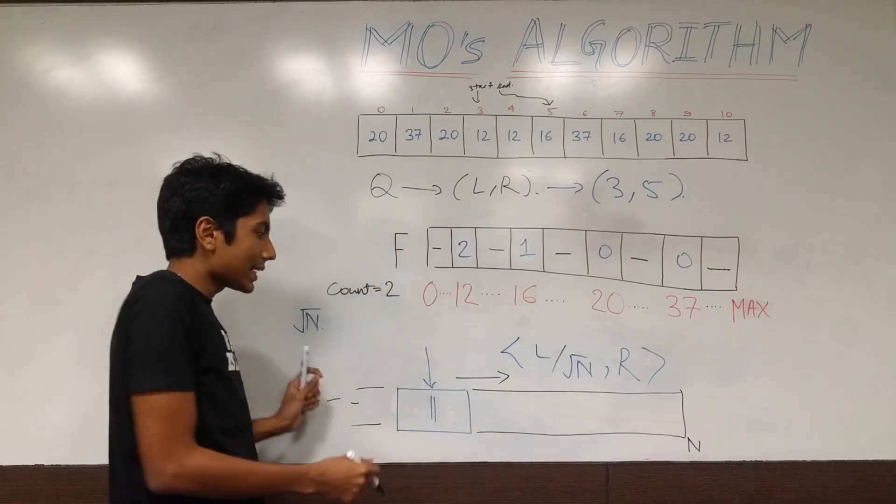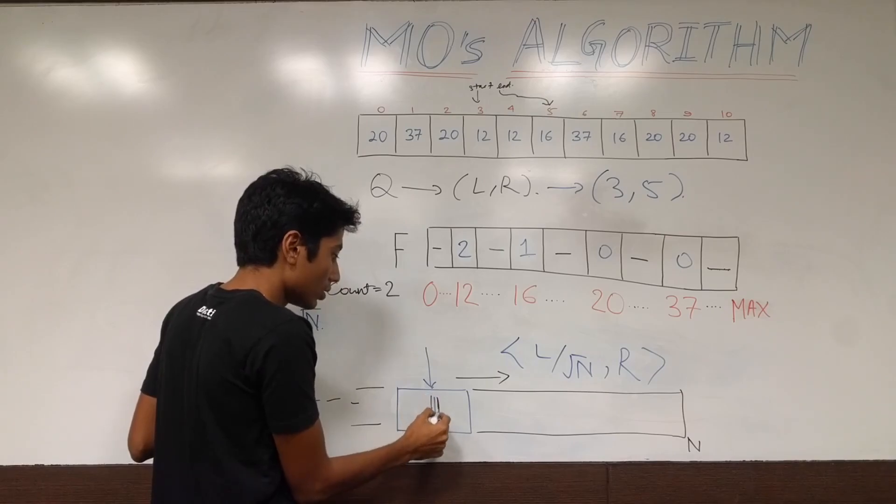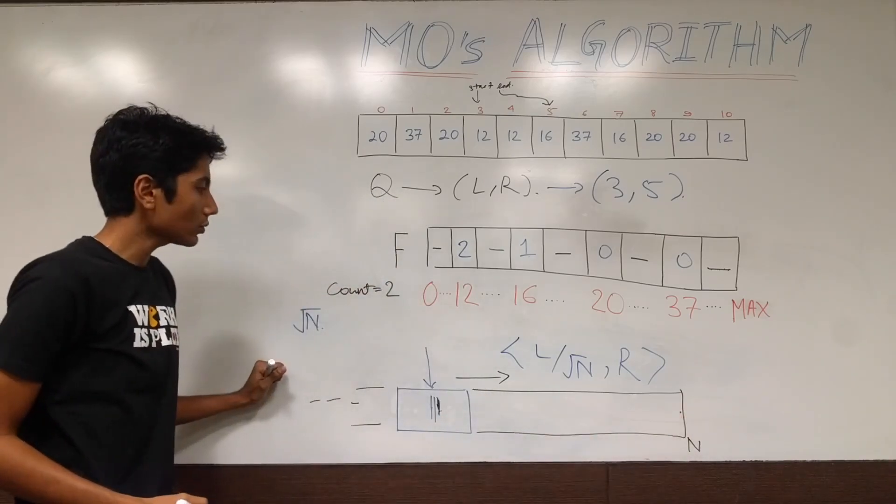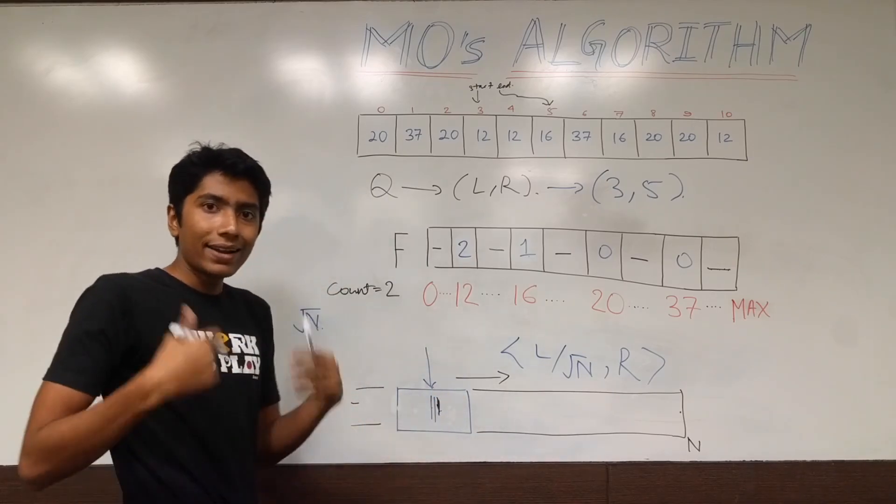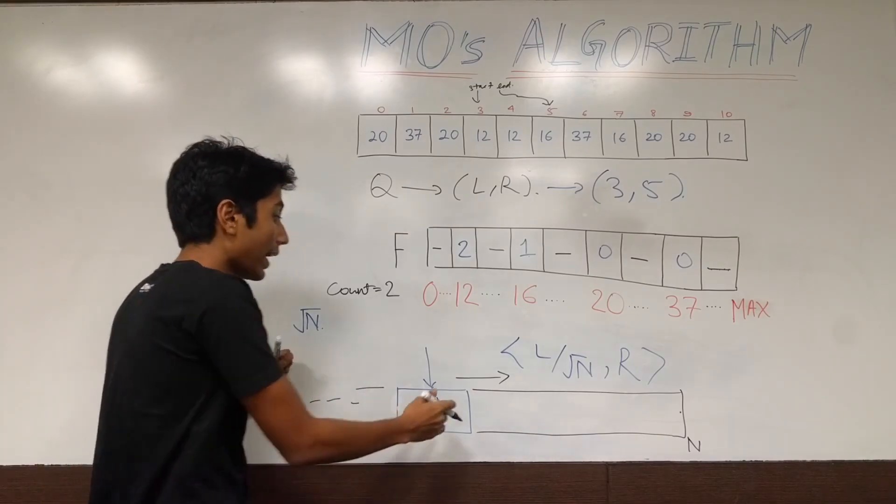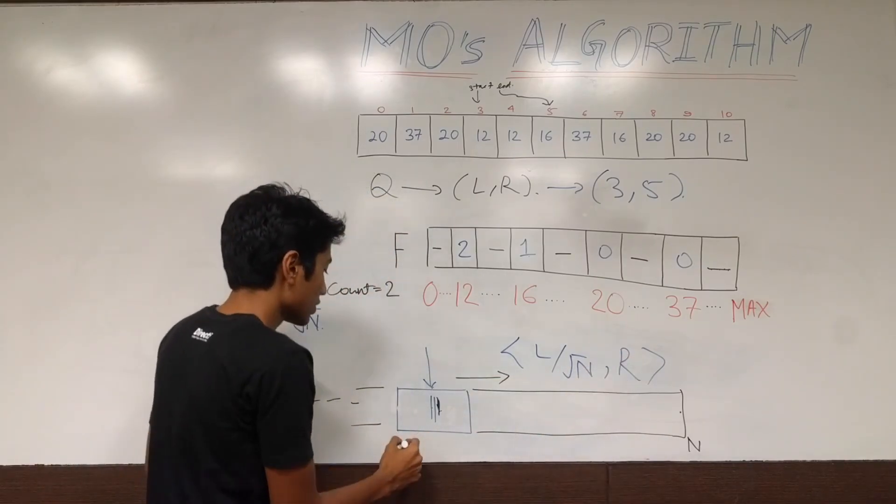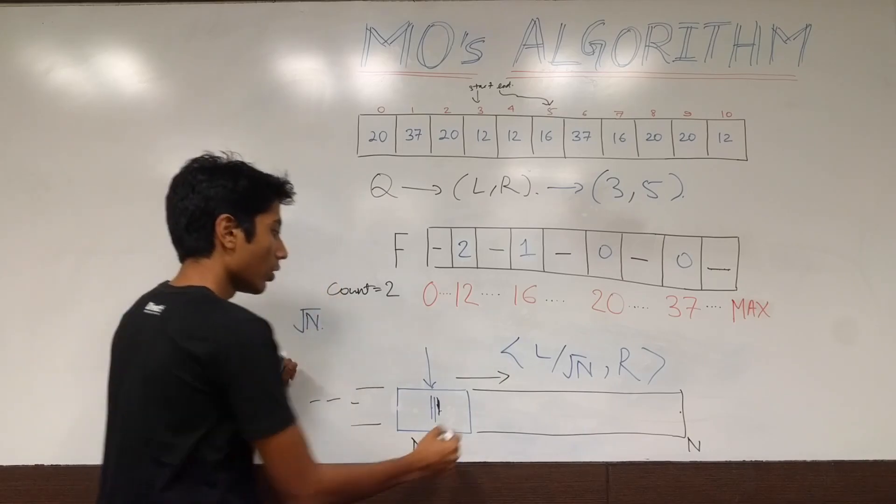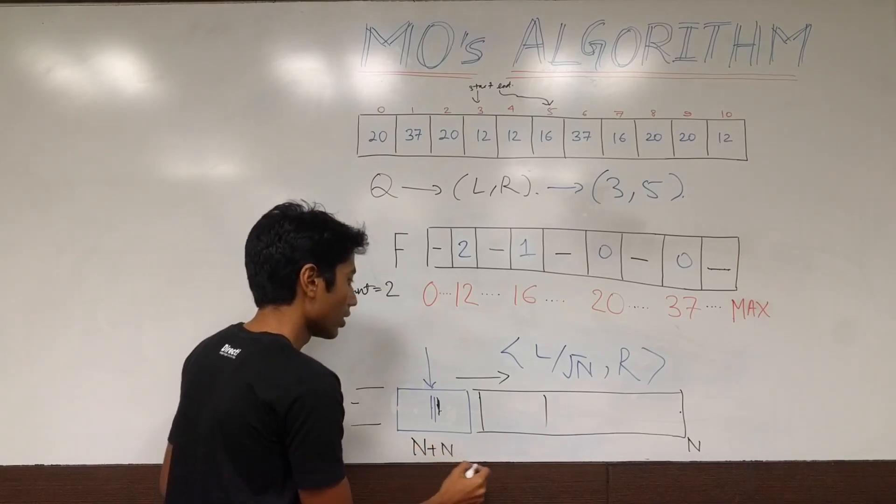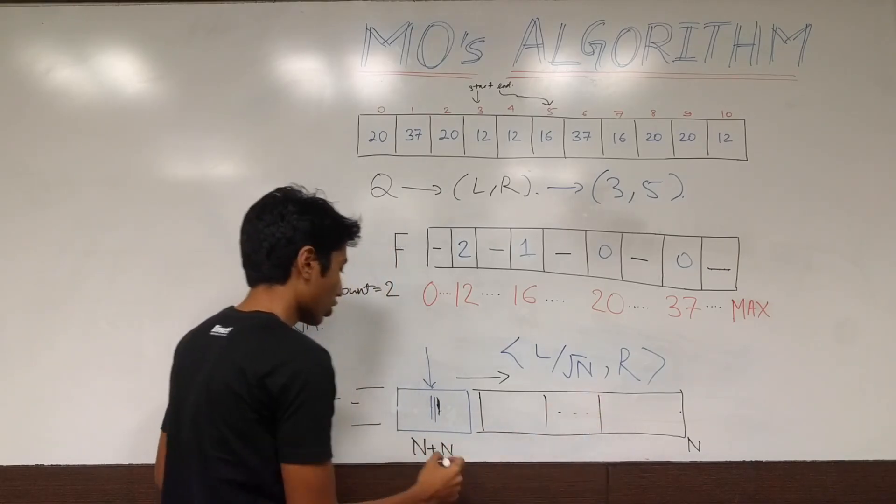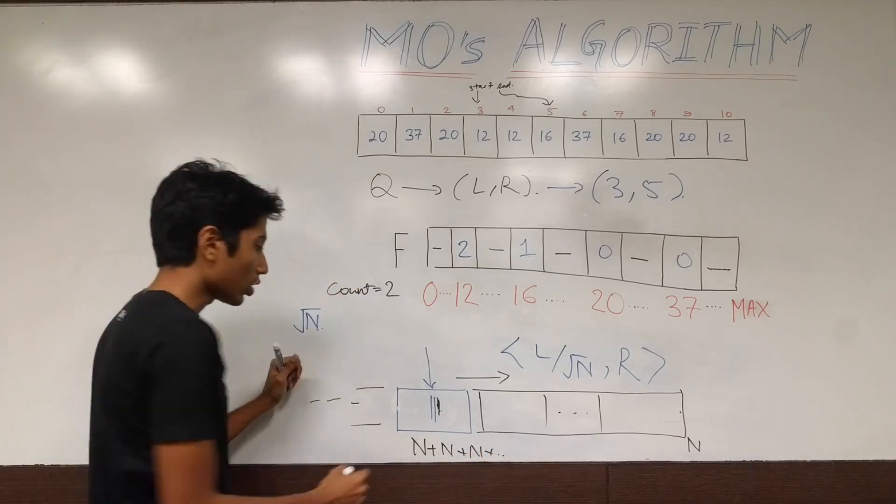And, the worst case scenario is, it starts somewhere over here, end. And, goes all the way up to n. So, for this block, it traverses n elements. So, that is n. For the next block, it could do the same. So, that would be n. And, so on and so forth for the next block also. So, n. There are root n blocks.